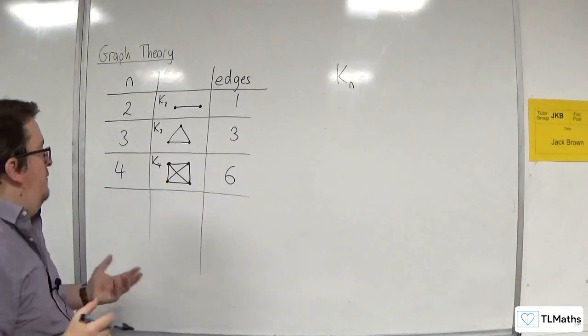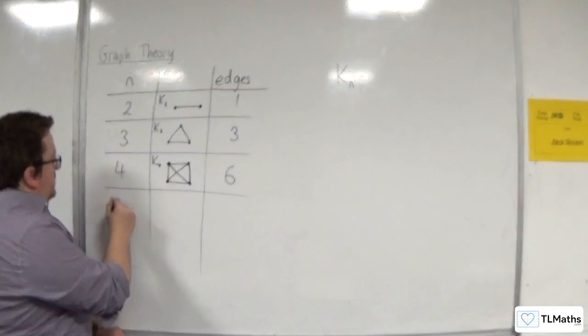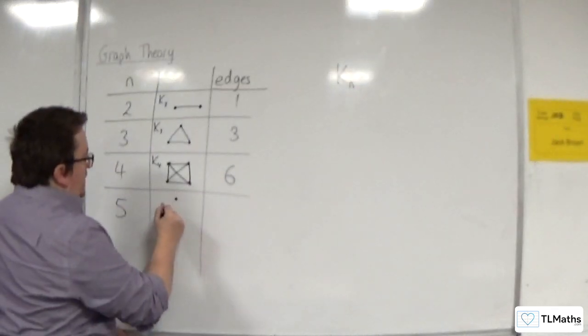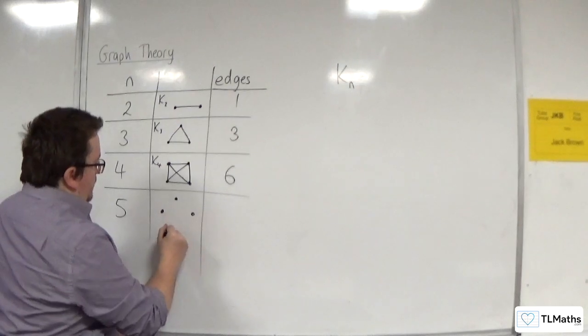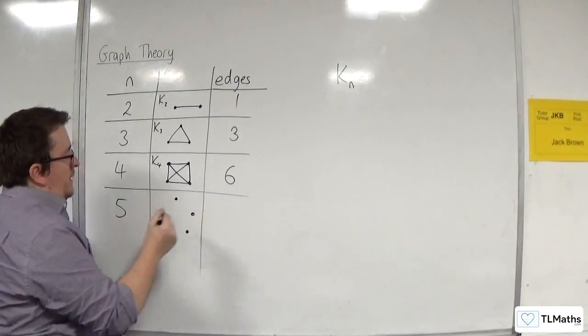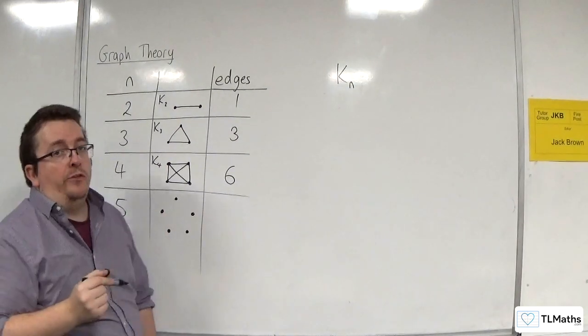Right, let's go up to K5. So, n is 5. We're going to have 1, 2, 3, 4, 5 nodes. Right, let's count how many edges we would have.